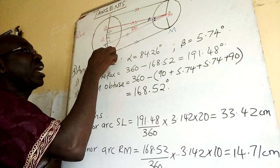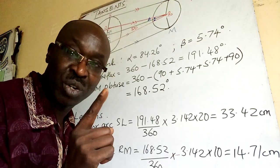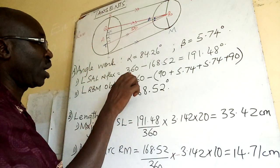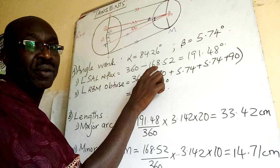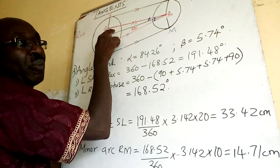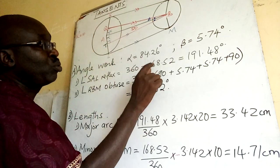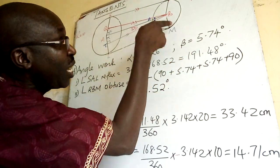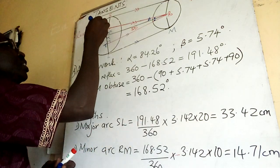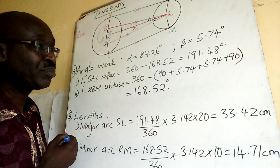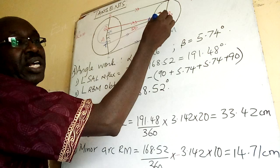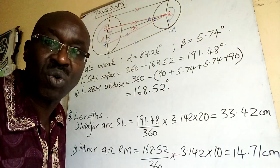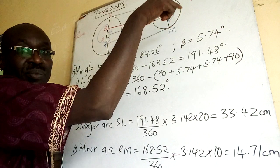Step one: find angle SAL reflex, because that gives us the length of the major arc. I have 360 minus double this angle. 84.26 + 84.26 = 168.52. Subtracting from 360 gives the reflex angle SAL.